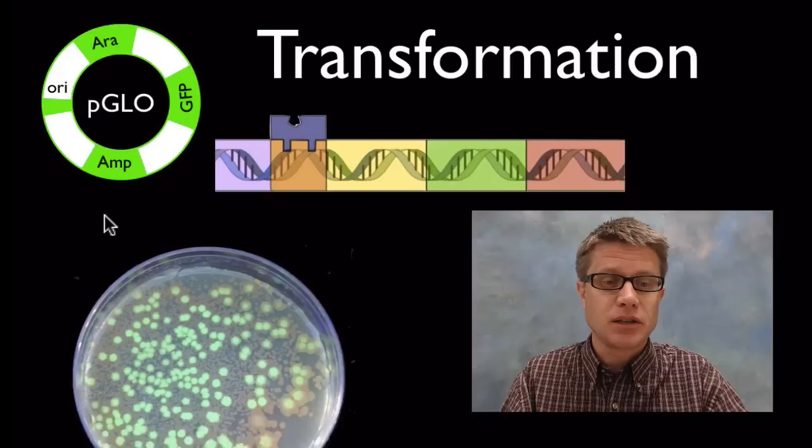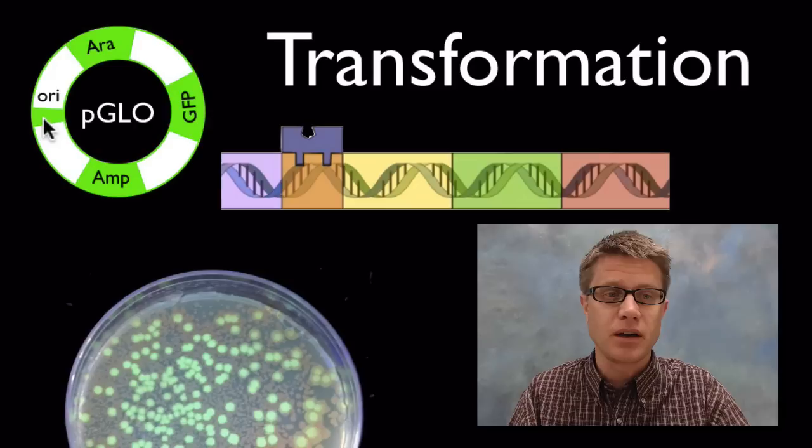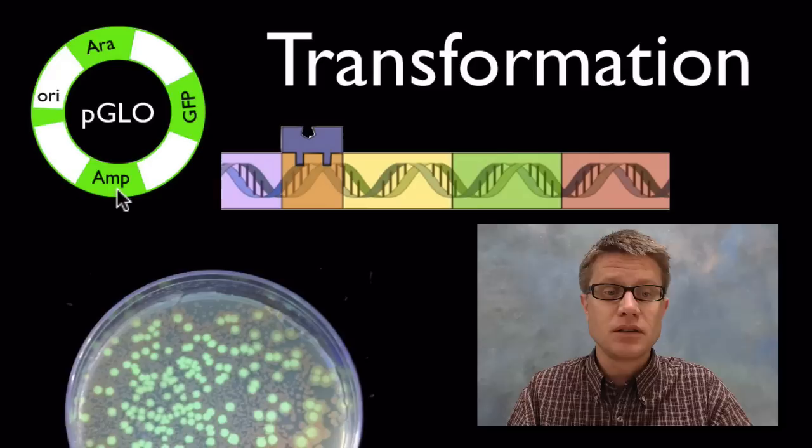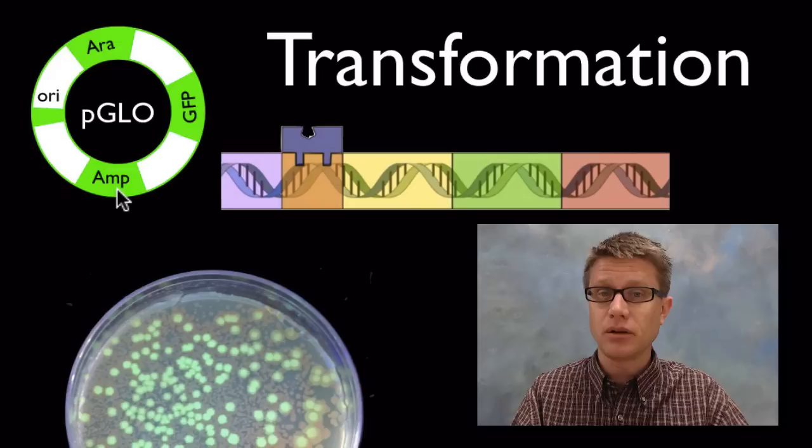This is what a plasmid looks like. The one that we'll use in this lab is called pGLO. It's got four things that are important. This is where the DNA will start being copied. This is a resistance to ampicillin. So if they pick up this plasmid, ampicillin won't kill them. That's an antibiotic.